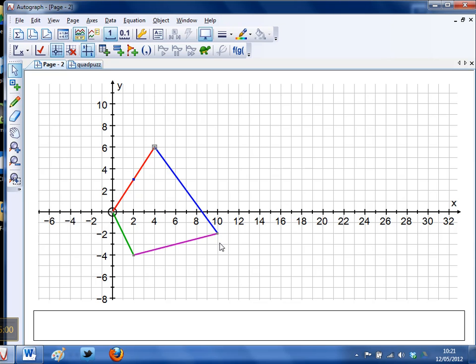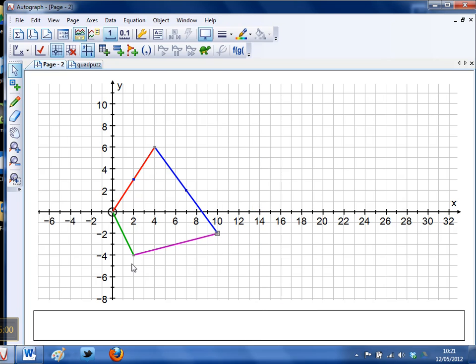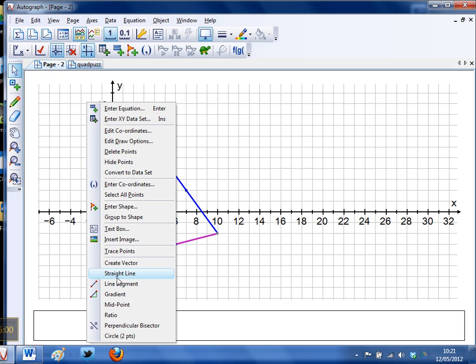I'll do the same for all of these. So select two points, right-click and midpoint. I'll do that to there, right-click midpoint, and I'll do that to there, right-click and I'll do midpoint.